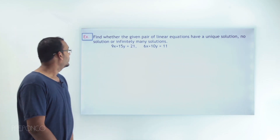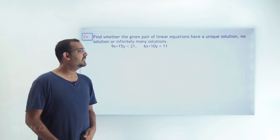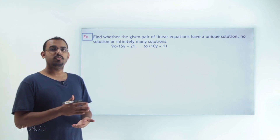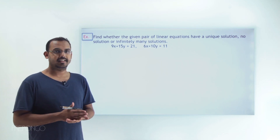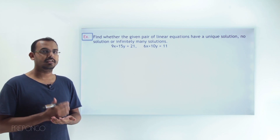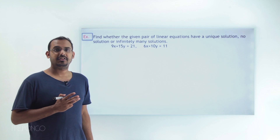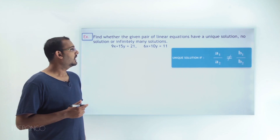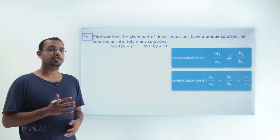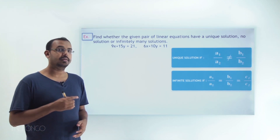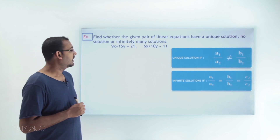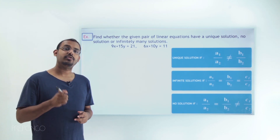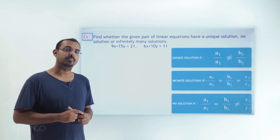Let's move on to the second question. Again, we have to figure out if the given pair of linear equations has a unique solution, no solution, or infinitely many solutions. We'll use the relationship between coefficients and consistency. For a unique solution: a1/a2 ≠ b1/b2. For infinitely many solutions: a1/a2 = b1/b2 = c1/c2. For no solution: a1/a2 = b1/b2 ≠ c1/c2.